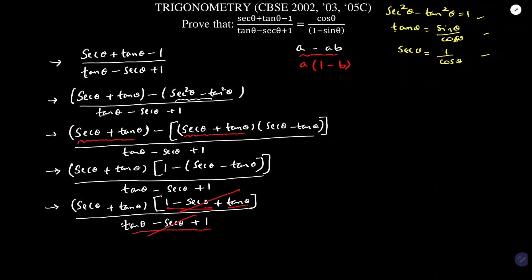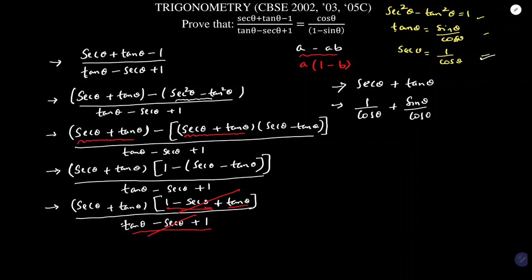After cancellation, I am left with sec θ + tan θ. But the required answer is cos θ/(1 - sin θ), so I will now change: sec θ becomes 1/cos θ and tan θ becomes sin θ/cos θ. The LCM is cos θ and the numerator becomes 1 + sin θ. But I need cos θ/(1 - sin θ), so I will rationalize.